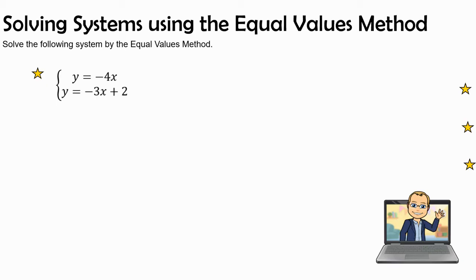When we graph these two equations, the solution to the system is where those two lines cross each other. The directions say solve the following systems by using the equal values method. In this first equation, we have y equals negative 4x and y equals negative 3x plus 2.